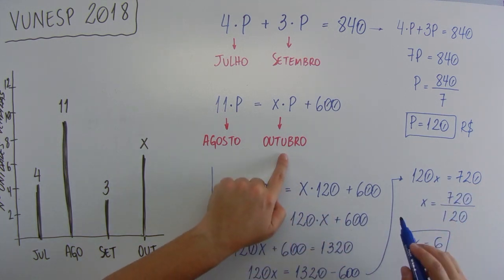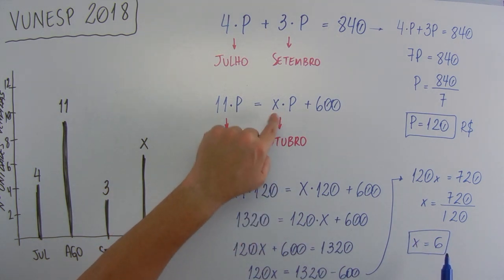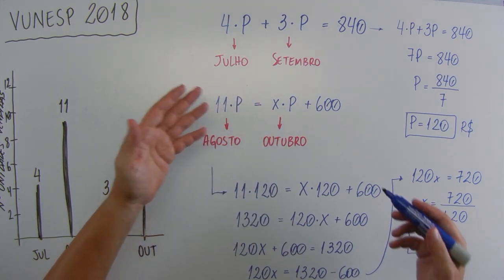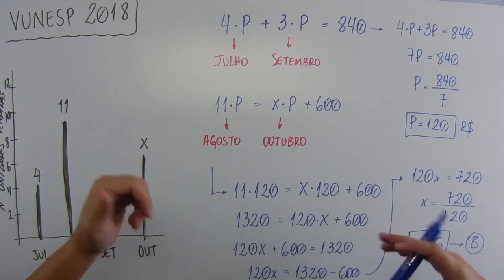Quer dizer que em outubro foram vendidos 6 produtos. E isso está na letra B.